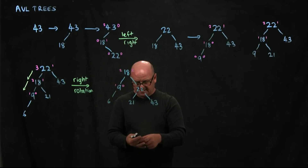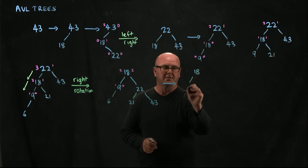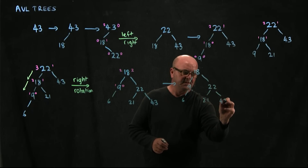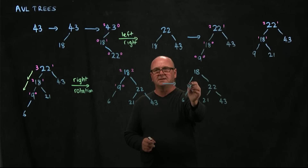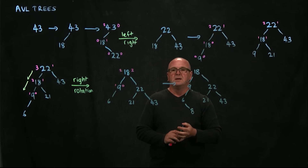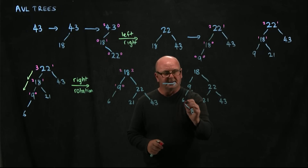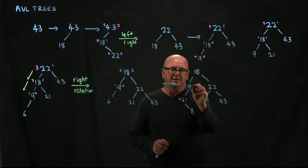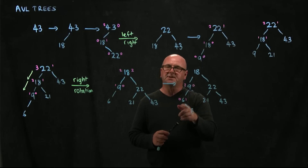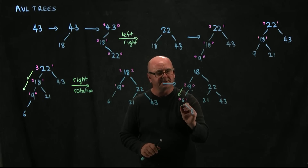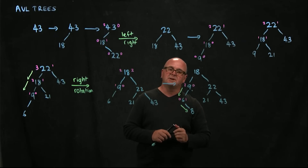Next we add the 8. The 8 is less than 18, less than 9, but more than 6, so 8 comes in as the right child of 6. Is the tree balanced? The 6 has 0 and 1 — that's okay. The 9 has 2 edges on the left and 0 on the right — so this tree is imbalanced at the 9. The imbalance is in the left child's right subtree, so we need to do a left-right rotation.